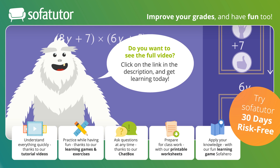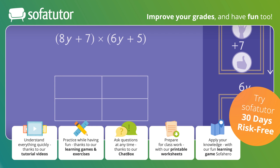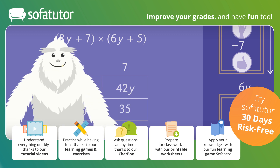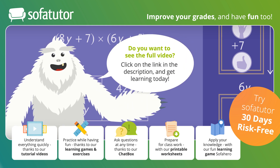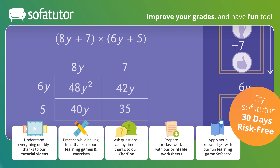There's another method to solve this — you can also use the area model. This time, the area model is set up using four rectangles to represent each of the four terms in the two binomials. The four rectangles are arranged in two rows and two columns. To find the products, multiply the rows by the columns to find each area. Add the like terms and write the result in standard form. Using the area model, the product of the two binomials is the same as before: 48y squared plus 82y plus 35.